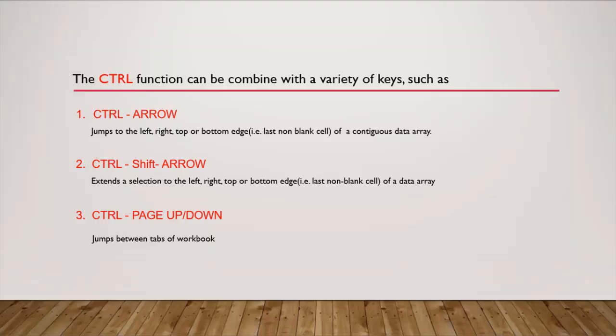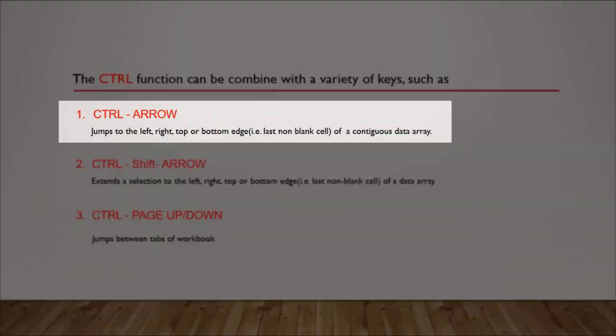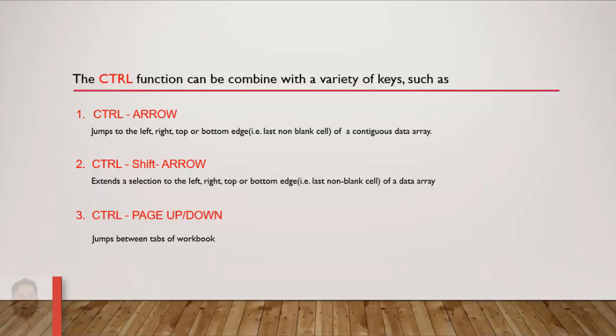Now let's look at the Control key. The Control key is used with the arrow keys. When Control is pressed with an arrow key, it jumps to the left, right, top, or bottom edge of a contiguous data area.